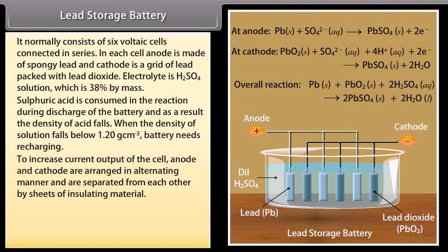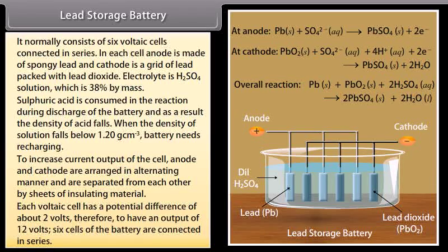To increase current output of the cell, anode and cathode are arranged in alternating manner and are separated from each other by sheets of insulating material. Each voltaic cell has a potential difference of about 2 volts. Therefore, to have an output of 12 volts, 6 cells of the battery are connected in series.